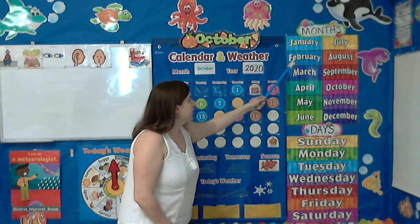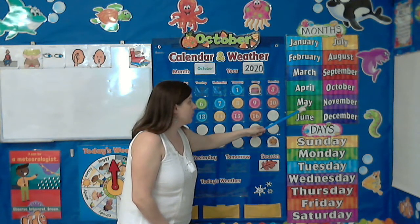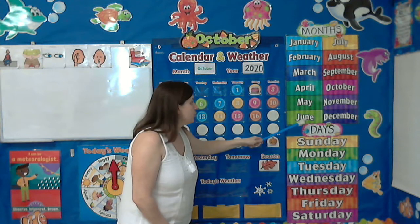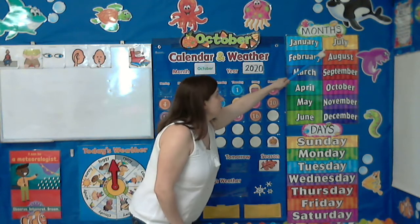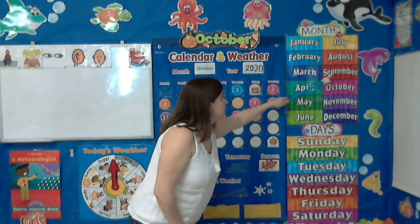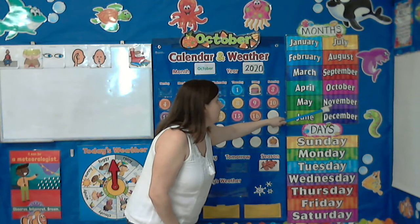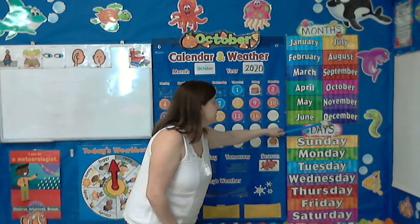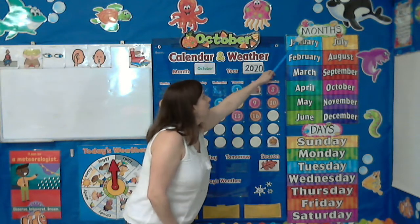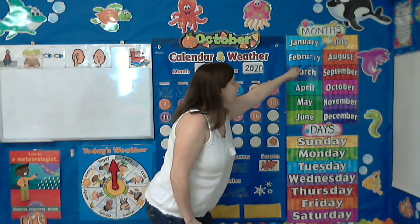January, February, March, and April, May, June, July, and August, September, October, November, December — 12 months in a year.